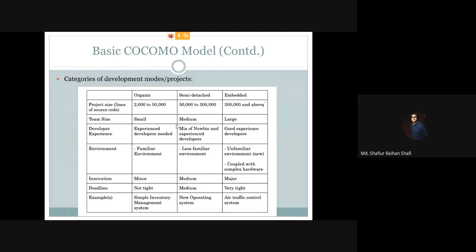This is the organic project development mode. Examples of this type of project include a simple inventory management system or a simple payroll system — systems currently in use in an organization that just need to be upgraded. The back-end logic will remain largely the same with very little innovation required. So these are organic projects.